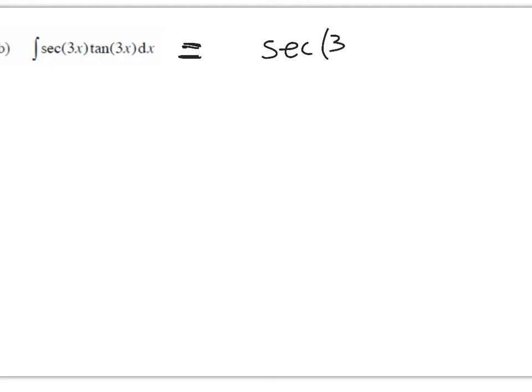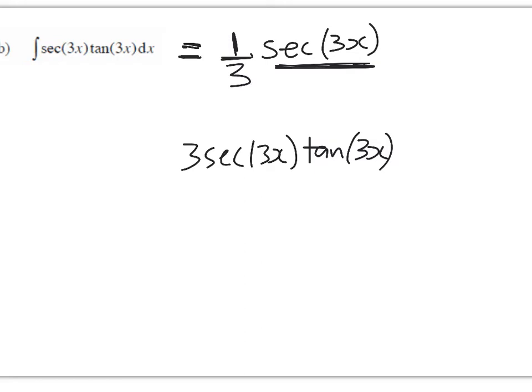If we anti-differentiate to sec of 3x, so look at sec of 3x and think, if I differentiate this, what will I get? Well, by the chain rule, I'll get 3 sec of 3x tan of 3x. And I don't want three of them, I just want one. So I need to do this times 1 third plus c. So that's that one done.